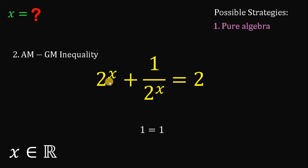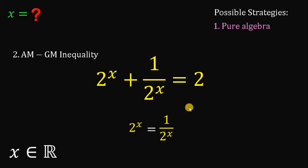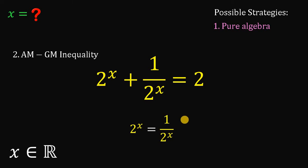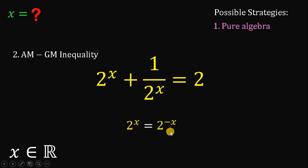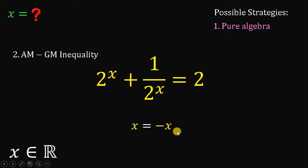It only follows that 2 raised to x must be equal to 1 over 2 raised to x, or a must be equal to b. Now we can solve for the value of x. Take note that the right-hand side can be written as 2 raised to negative x. Now we have the same base and they are equal, therefore their exponents must be the same, so x must be equal to negative x. The only real number that satisfies this equation is x equals 0.